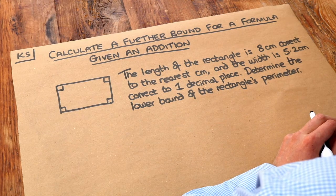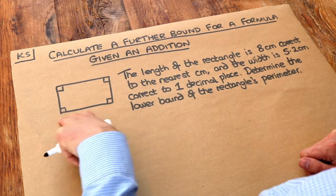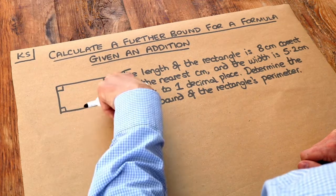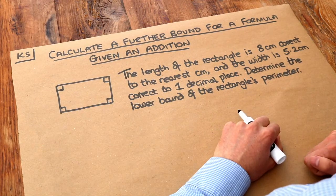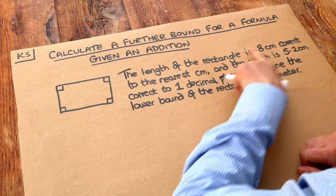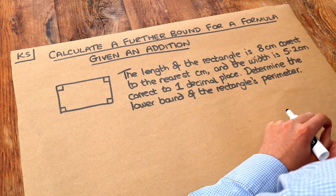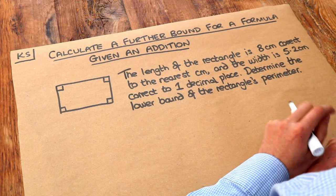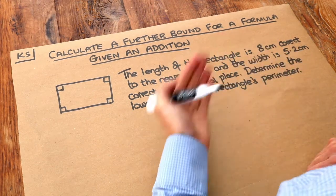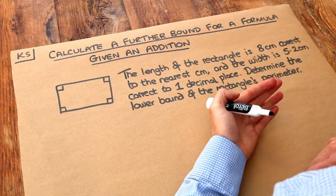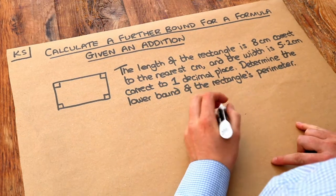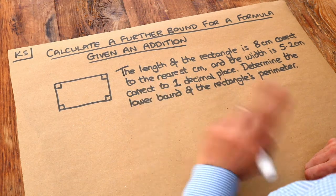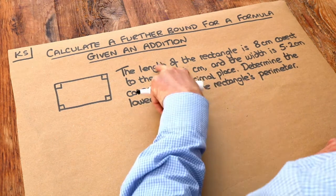Well, let's first think: how would we find the perimeter of the rectangle? We would just add the various sides together. The thing is we don't know the exact length — it's 8 centimetres correct to the nearest centimetre, but before rounding it could have been a smaller value. So what we should do first is find the lower bound and upper bound for each measurement.